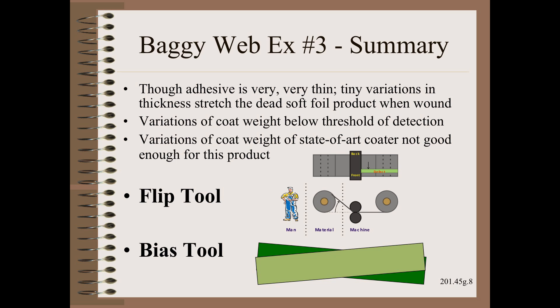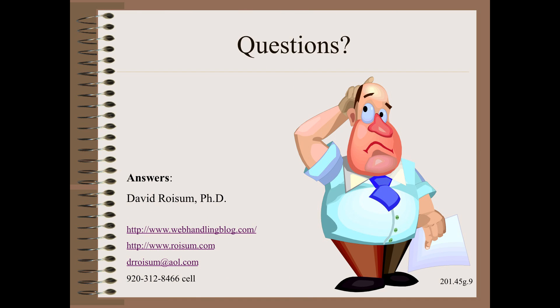However, for troubleshooting we learned two super powerful tools for situations that are asymmetric. First, we could flip the supply rolls. Second, we can bias machinery. Thank you so very much for watching this module in my Plant Practical video series. Stay tuned as we continue our tour of successful Baggyweb troubleshooting case histories.